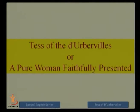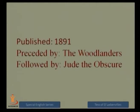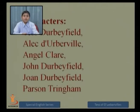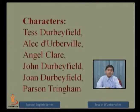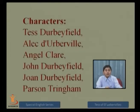Our today's topic is Tess of the d'Urbervilles, whose second name is A Pure Woman Faithfully Presented. This novel was published in 1891. It was preceded by The Woodlanders and followed by Jude the Obscure. The major characters of this novel are Tess Durbeyfield, Alec d'Urberville, Angel Clare, John Durbeyfield, and Parson Tringham.